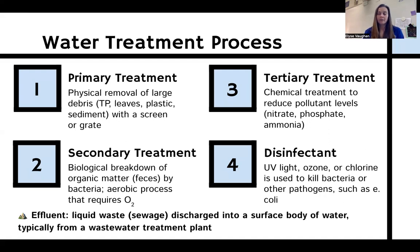The third step is tertiary treatment. This is chemical treatment that reduces pollutant levels, including nitrate, phosphate, and ammonia. It can also address trace materials such as pharmaceuticals or endocrine disruptors.